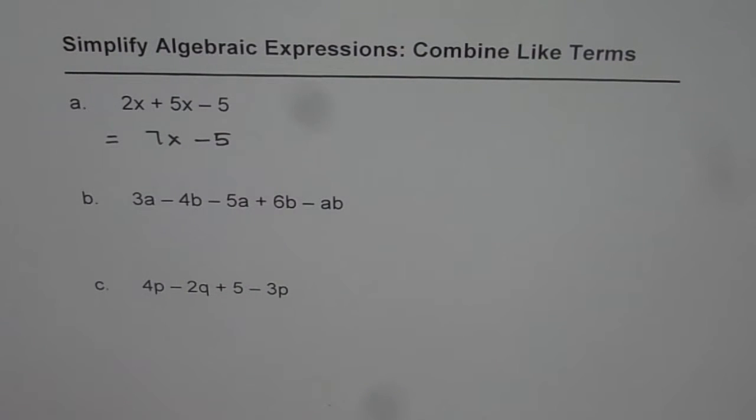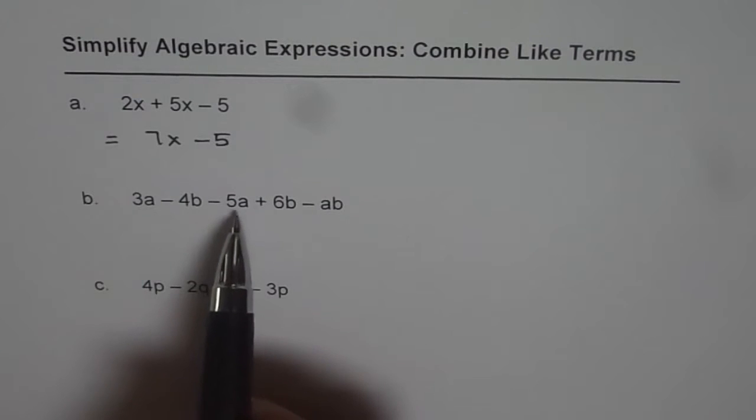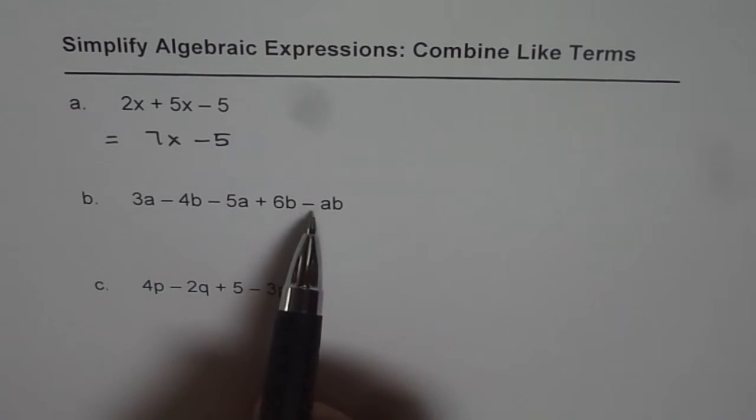Now, let us look into the next expression. Here we have five terms: 3a minus 4b minus 5a plus 6b minus ab.